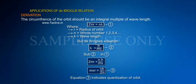But de Broglie's equation: λ = h/μ (Equation 2). Substituting equation 2 in equation 1: 2πr = nh/μ. Therefore μr = nh/2π (Equation 3). Equation 3 indicates quantization of orbit.